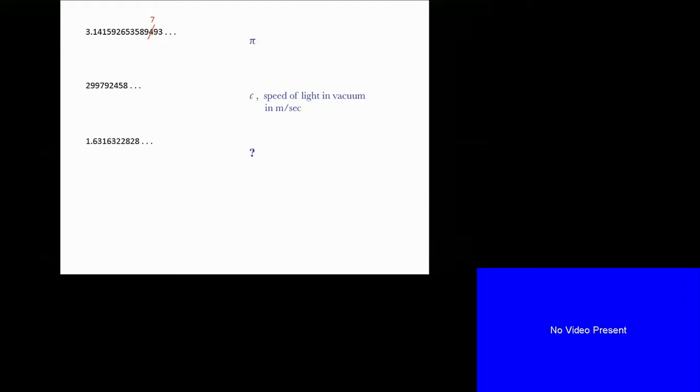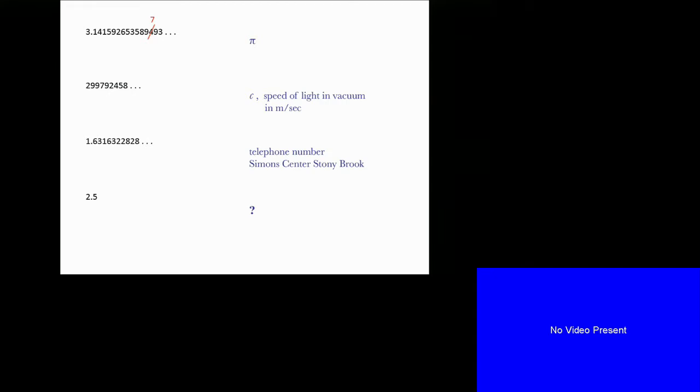And then sometimes you meet numbers that look really familiar, but you can't place. For example, when I saw this next number, 1.6 and so on, I thought I knew this, but I can't really know from where, and I mobilized my entire scientific education, but I can't see it. But finally, Eureka, yes, of course, I know what it is. It's the telephone number of Simon's Center in Stony Brook.